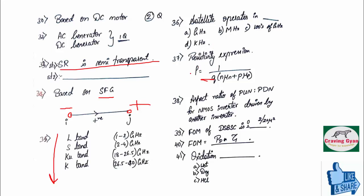And thirty-seventh question was based on resistivity expression. This question, they have asked N number of times. Resistivity is given by 1 divided by sigma. Sigma is given by NQ mu N plus PQ mu B in the case of semiconductors. In the case of metals, it is NQ mu N.